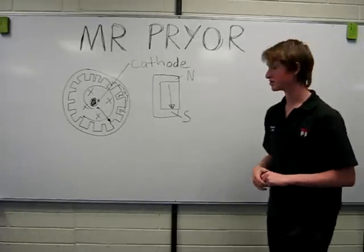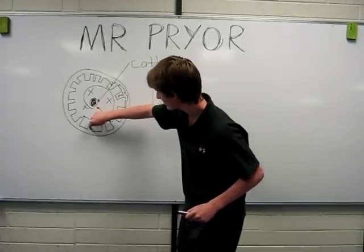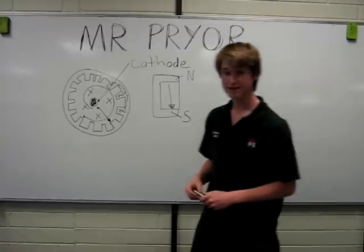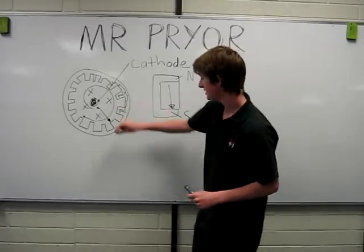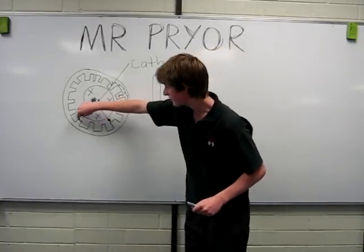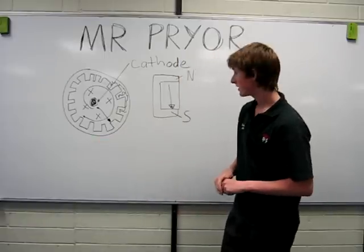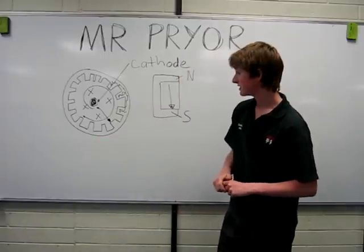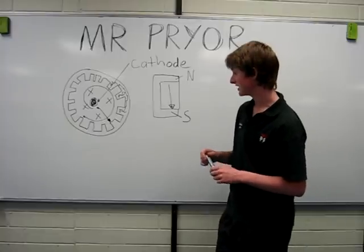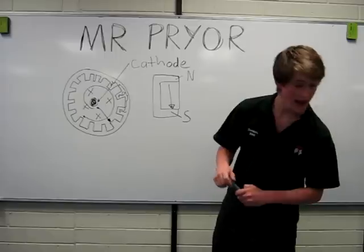Now as these electrons fly clockwise, they pass these little segments here called anode veins — these little metal segments which are part of the anode between the cavities, which is just space. As the electrons pass, they charge these little anode veins positively.